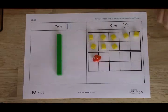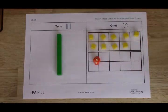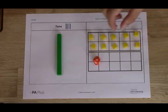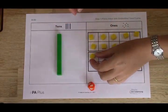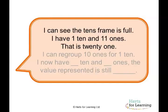When you have more than 10 ones regrouping will need to take place again. However before you regroup get the child to tell you the value represented. Use the first half of the speaking frame. I can see the tens frame is full. I have one 10 and 11 ones. That is 21.